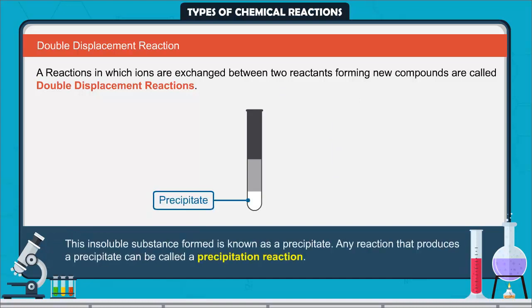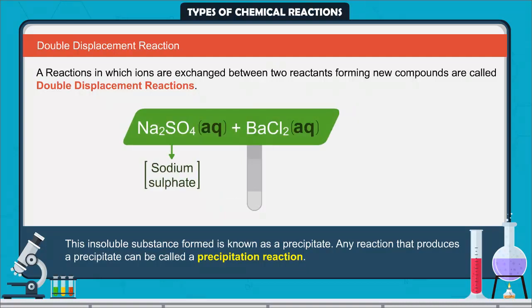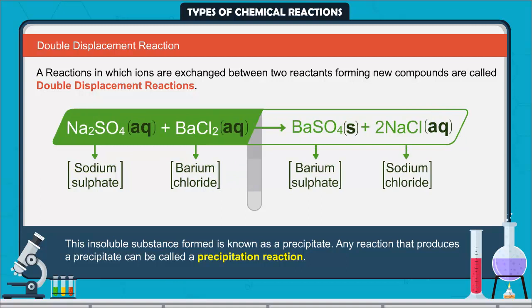This insoluble substance formed is known as a precipitate. Any reaction that produces a precipitate can be called a precipitation reaction. In this reaction, when sodium sulfate reacts with barium chloride, barium sulfate and sodium chloride are formed.